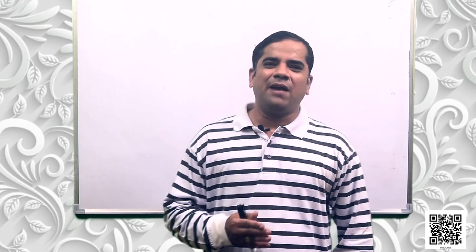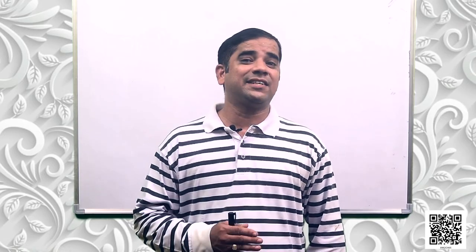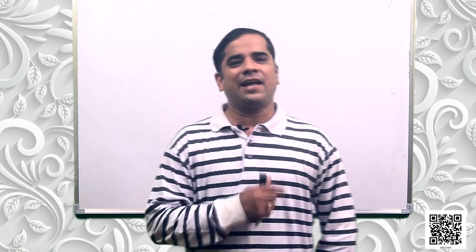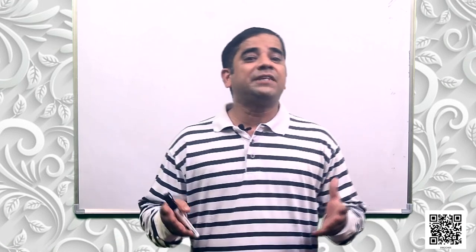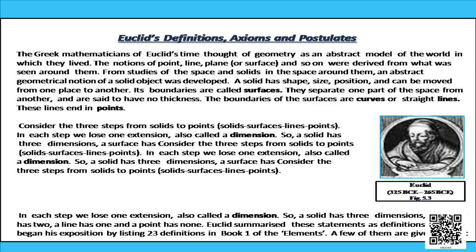With the flow of time, the world has seen many changes in the field of mathematics. In case of geometry, so many mathematicians were there who tried to build up different concepts, and Euclid is one of them. The Greek mathematicians of Euclid's time thought of geometry as an abstract model of the world in which they lived. The notions of point, line, plane and so on were derived from what was seen around them. From studies of the space and solids in the space around them, an abstract geometrical notion of a solid object was developed.